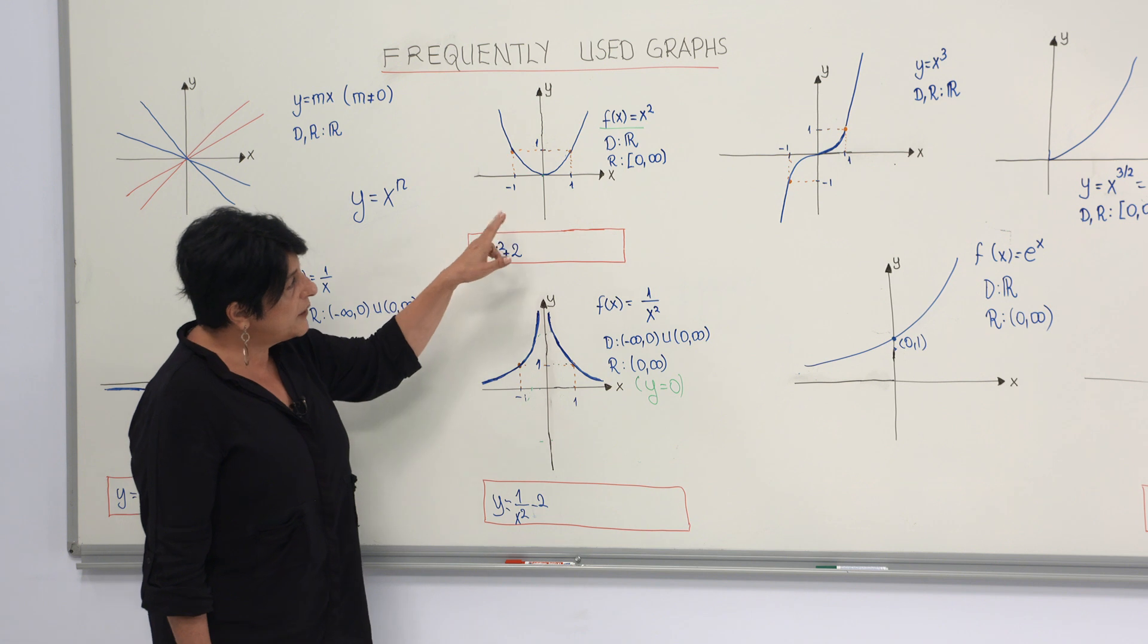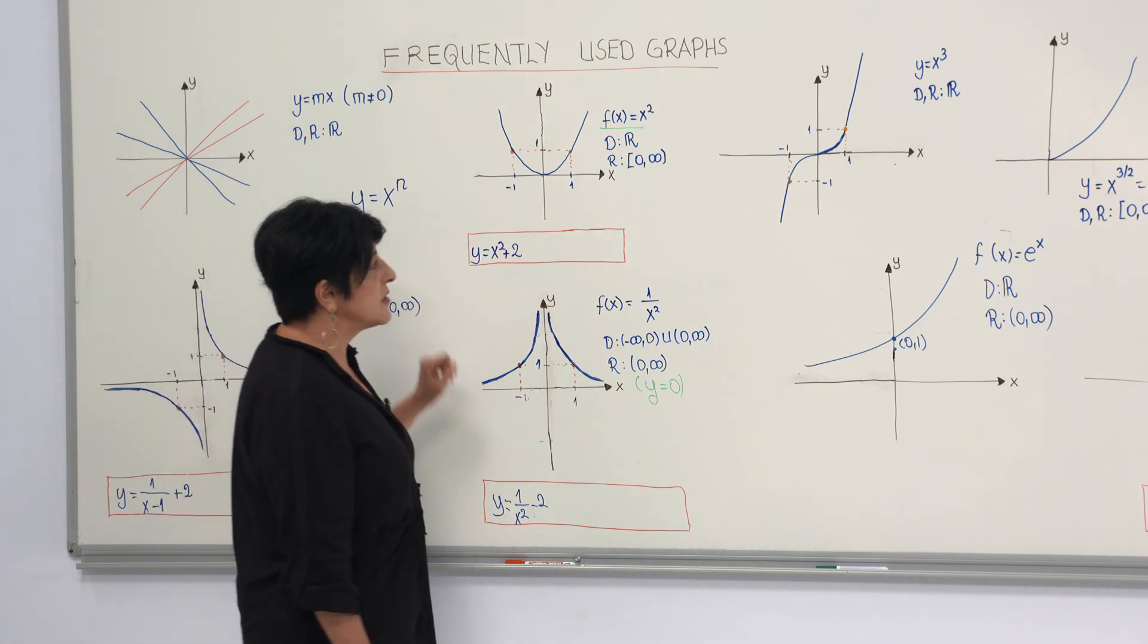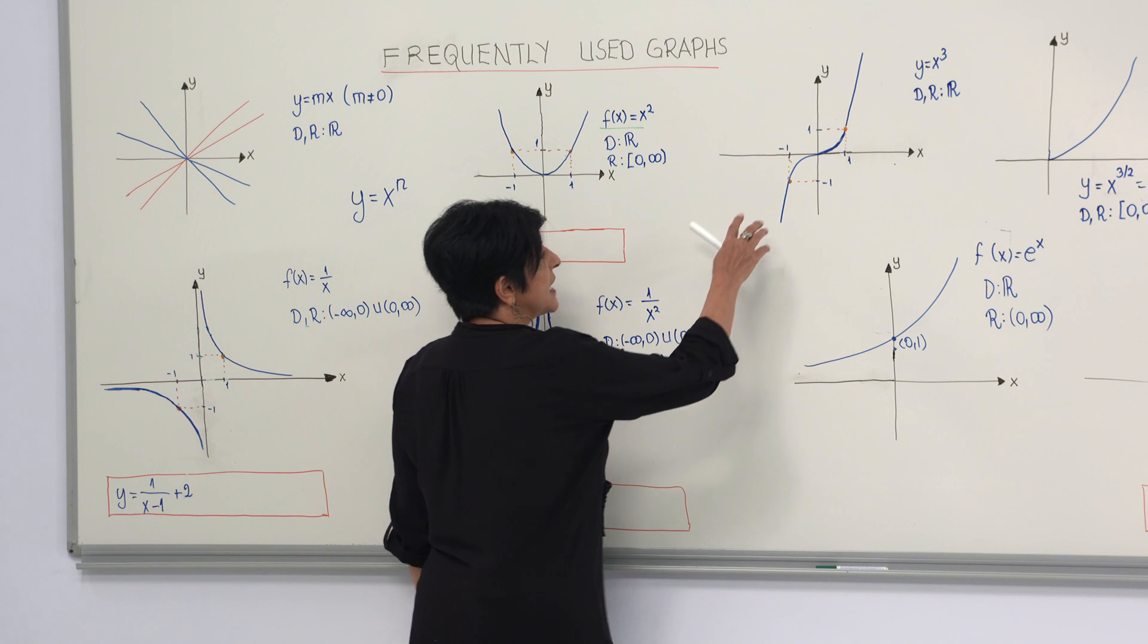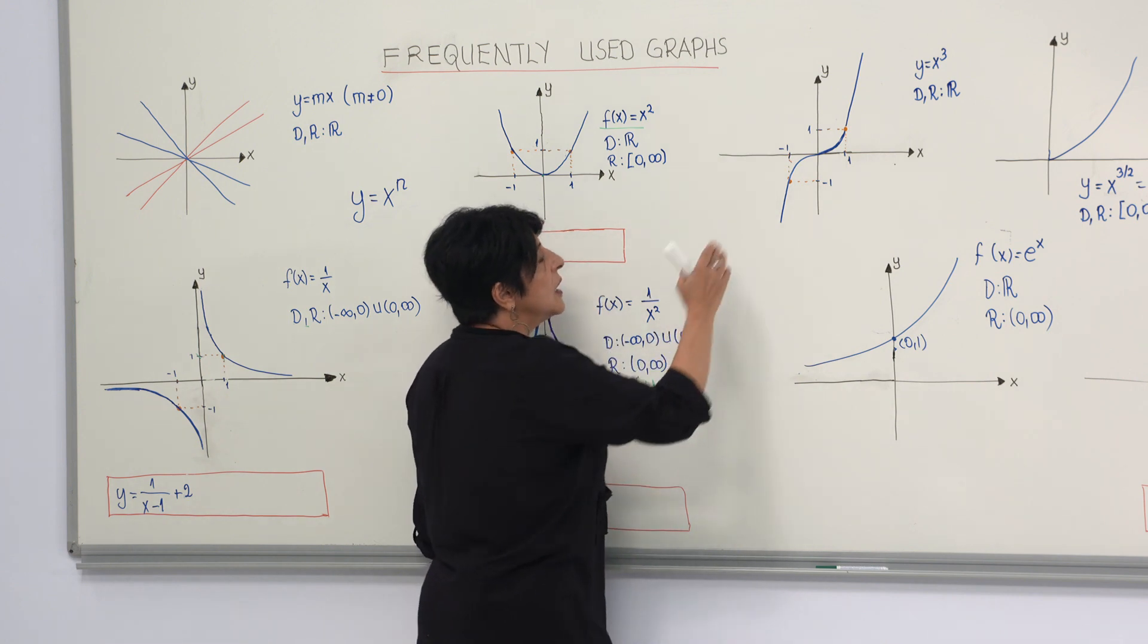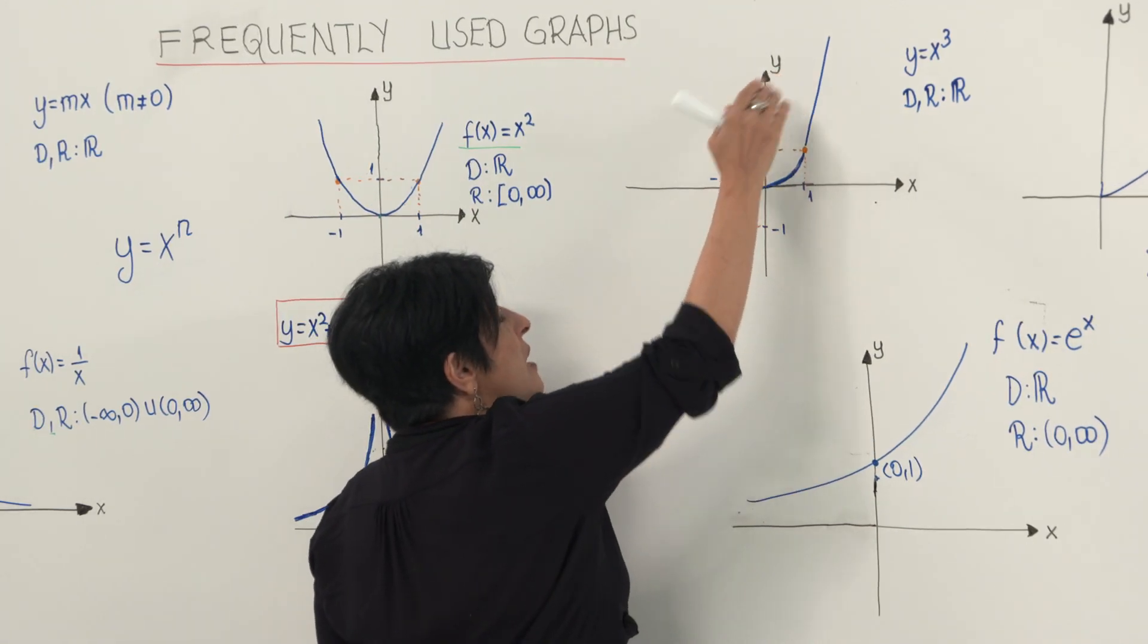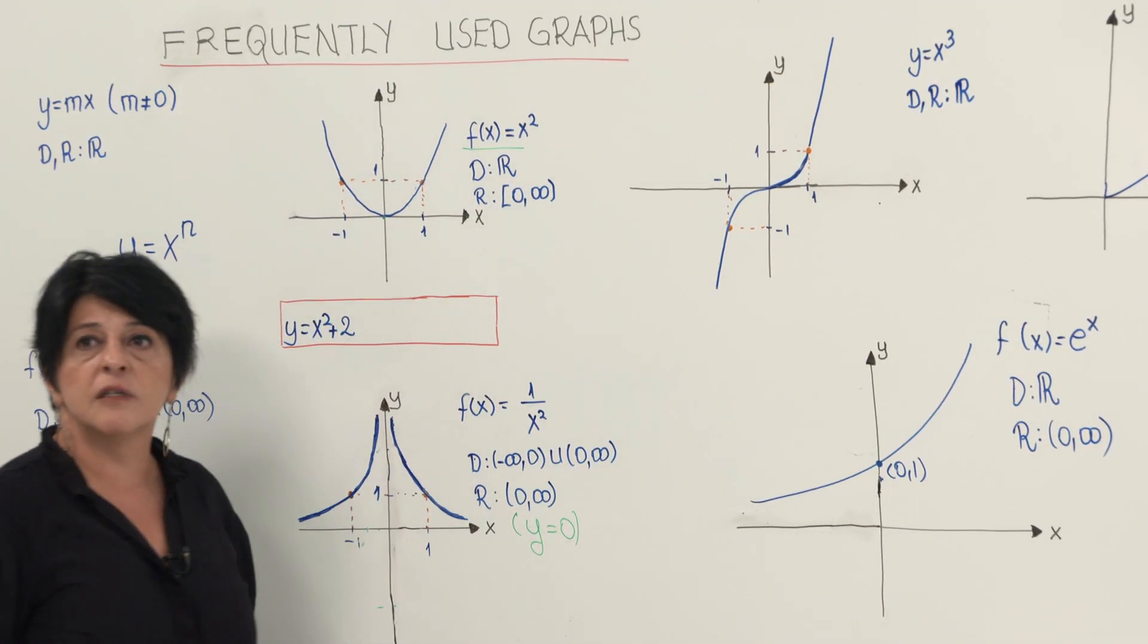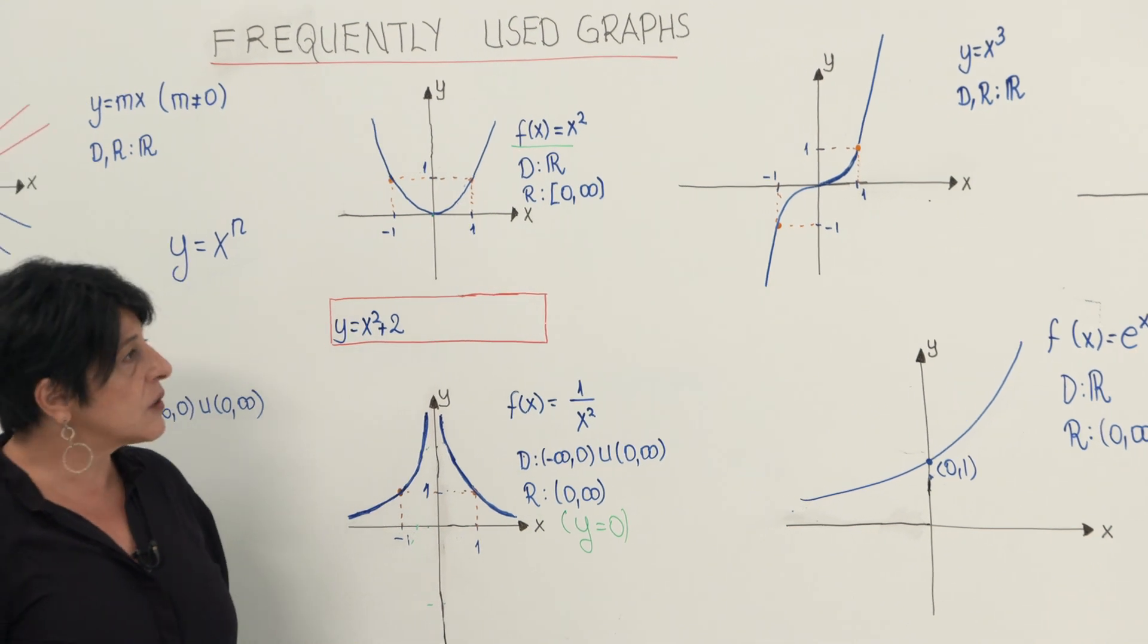If you compare the graphs of these two functions, you can see that the graph gets flattened towards the x-axis for the values of x between minus 1 and 1, and rises more steeply for the values of absolute value of x greater than 1.